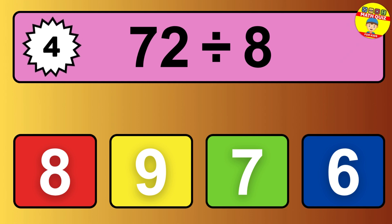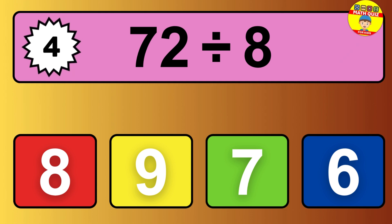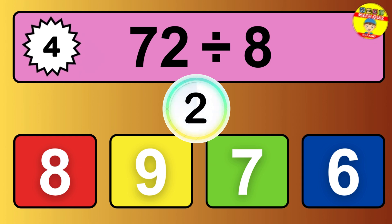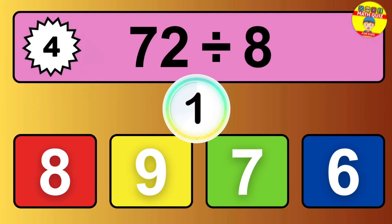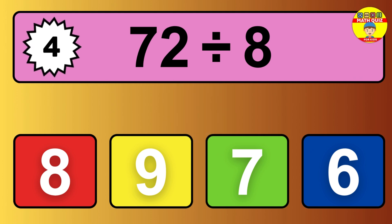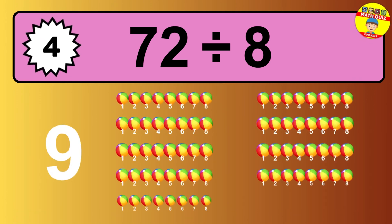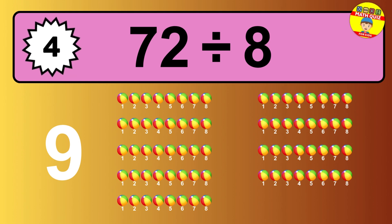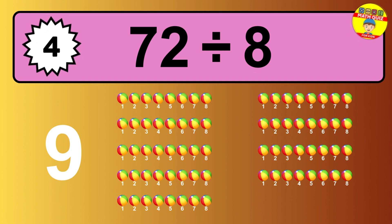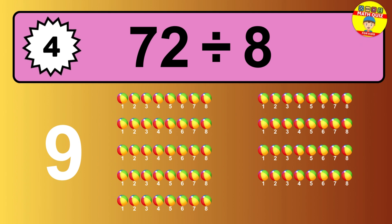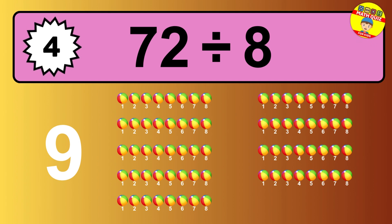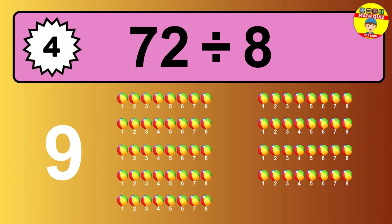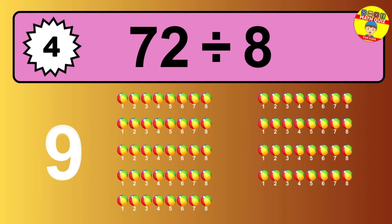What is 72 divided by 8? Imagine this: you have 72 objects to divide into groups of 8. How many groups can you make? Let's think about it. Ready to find out? Let's break it down. Let's imagine you have 72 objects — can you picture them lined up? Now think about splitting them equally into smaller groups.